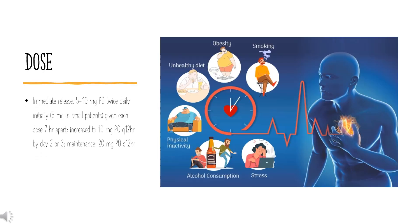Dose — Angina Pectoris: For prevention of angina pectoris caused by coronary artery disease, the immediate-release formulation is dosed at 5–10 mg orally twice daily initially (5 mg in small patients), with each dose given 7 hours apart, increased to 10 mg orally every 12 hours by day 2 or 3, with a maintenance dose of 20 mg orally every 12 hours.